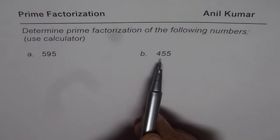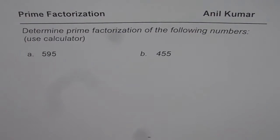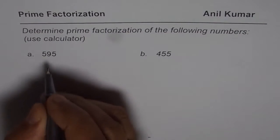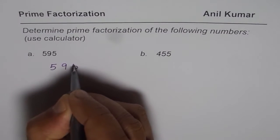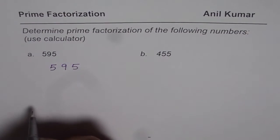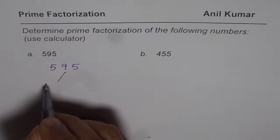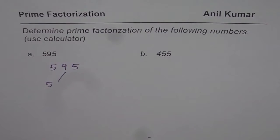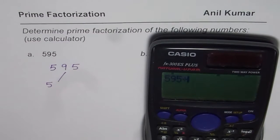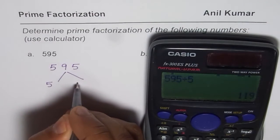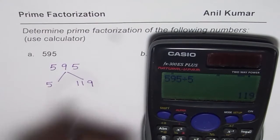595 and 455 are the two numbers to work with. Let us begin with 595. When you have a number like 595, we know it is ending with 5, so 5 is surely a prime factor. To get the other prime factors, we divide 595 by 5. What do you get? You get 119.